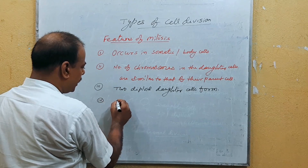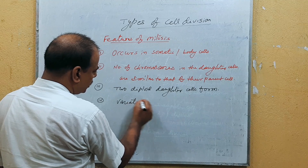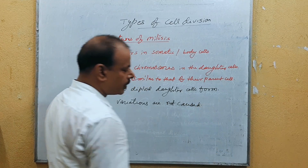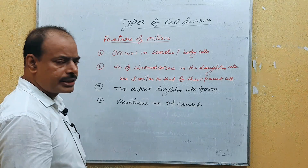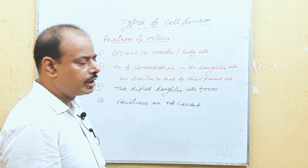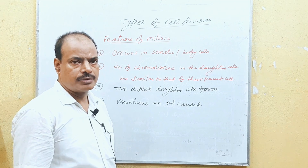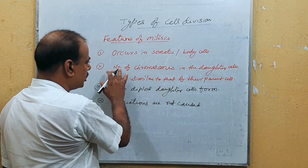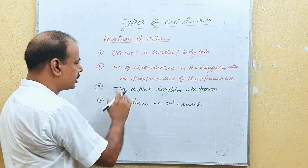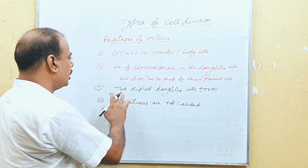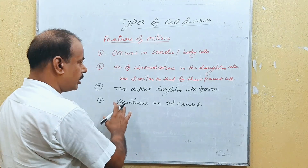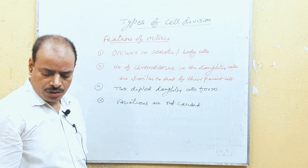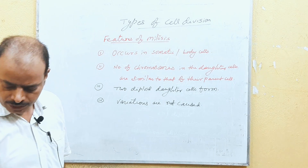Variations are not caused during mitosis. Therefore, mitosis cell division does not help in survival of an organism, and it does not help in speciation, meaning formation of new species. So the features are: occurs in somatic cells; chromosome number remains same as parent; two diploid daughter cells form; and variations are not caused.